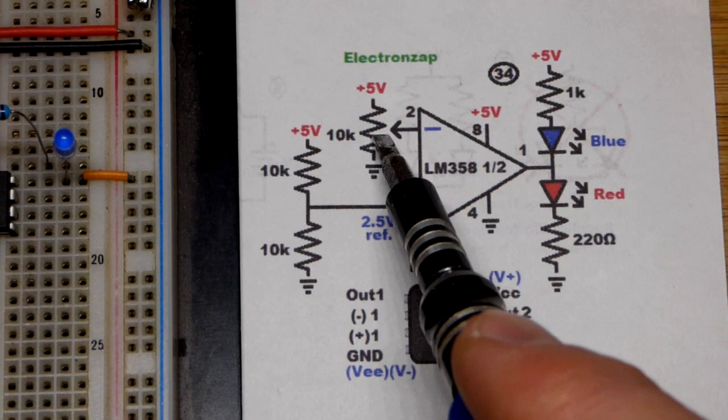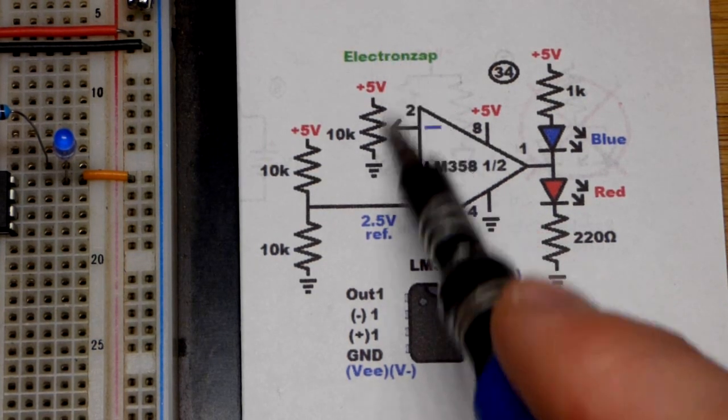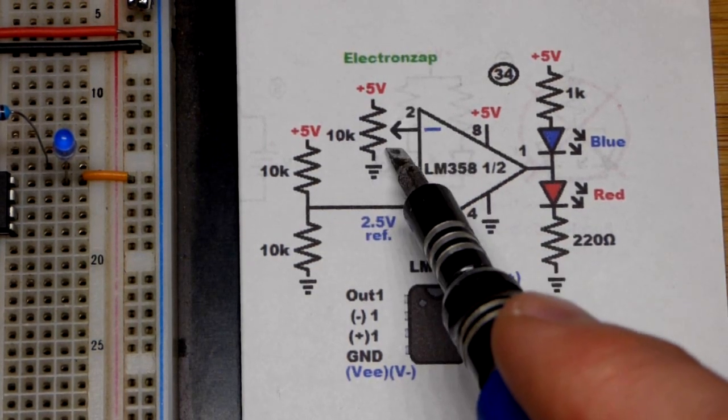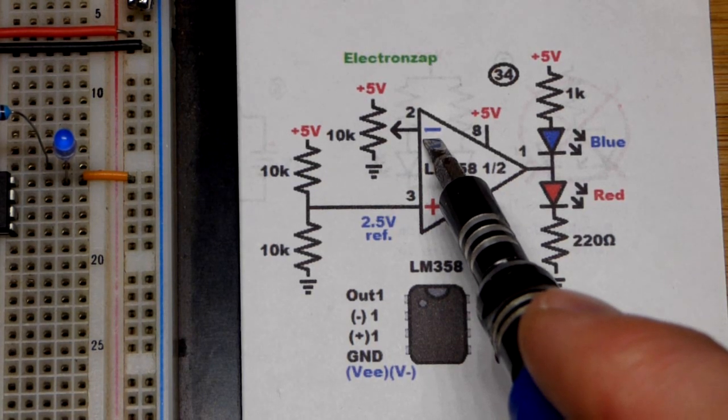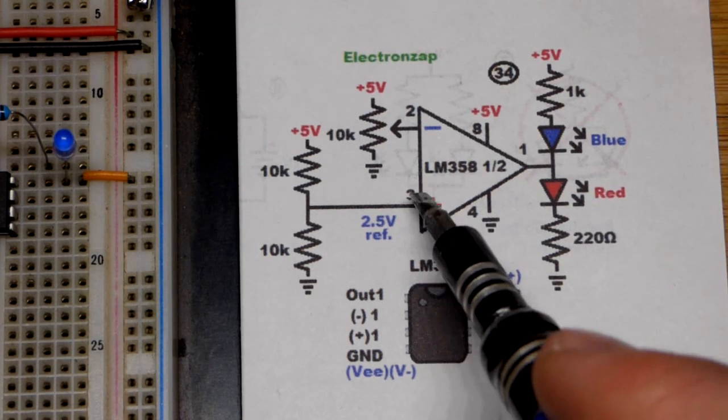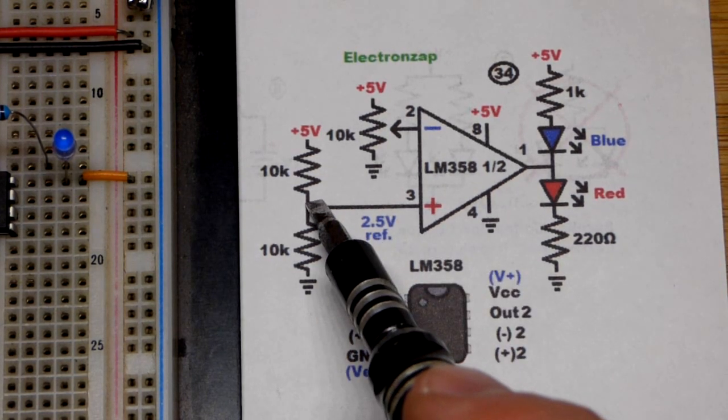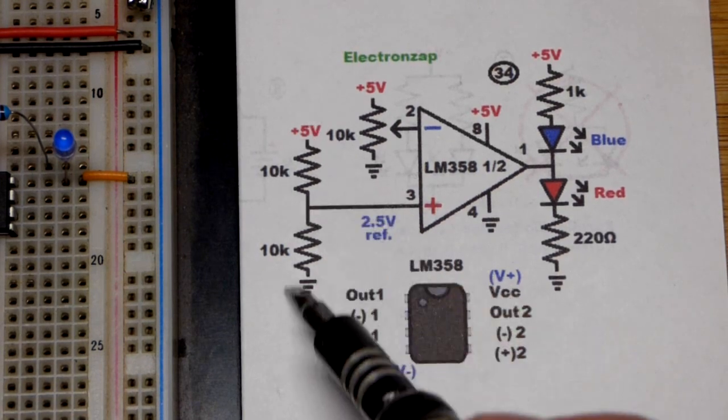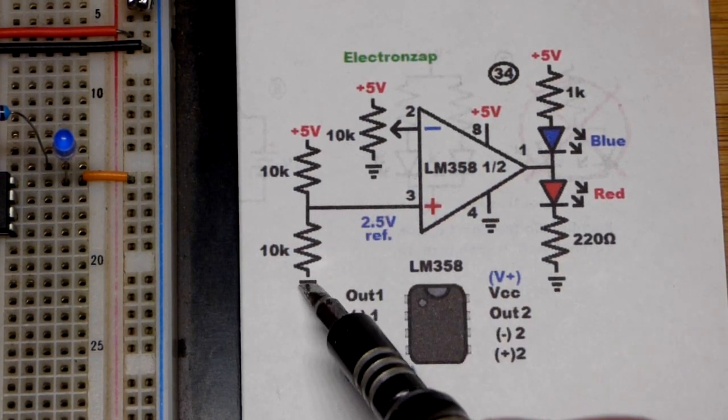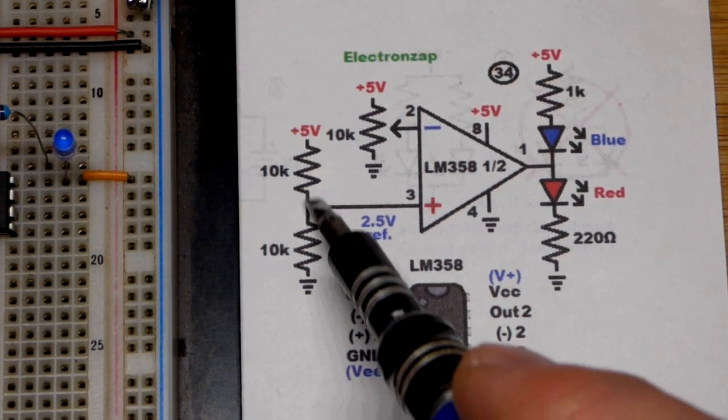So we have our signal. That is the trim pot there. We can go all the way up to five volts, down to zero volts, anywhere in between. So that is our signal. The output though wants to be more like the non-inverting input. So that's where we have our fixed voltage right there of about 2.5 volts, half of whatever the supply voltage is right there, because they're equal value resistors.